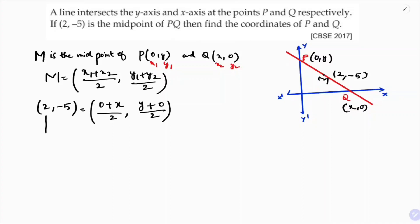Abscissa with abscissa. So 2 equals 0 plus x by 2. 2 times 2 is 4. 4 equals x, so x equals 4. The value of x is 4.